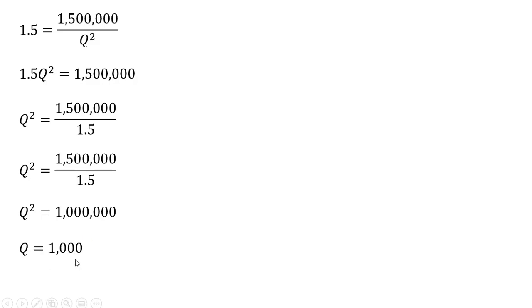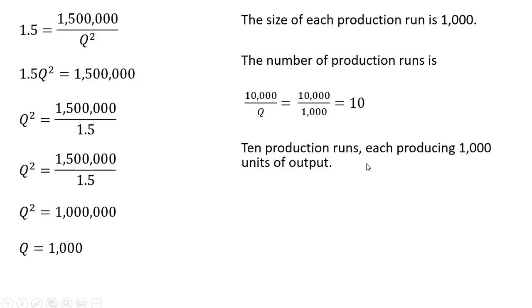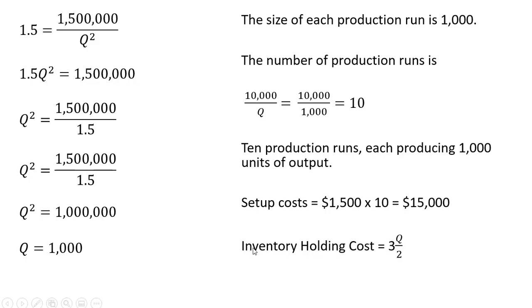So the optimal production run size is 1,000 units. Since we need to produce 10,000 units over the year, the number of production runs is 10,000 divided by Q, giving 10 production runs of 1,000 units each. Setup costs are 10 runs times $1,500, totaling $15,000. Inventory holding costs equal 1.5 times 1,000, giving $1,500.